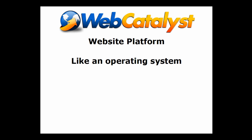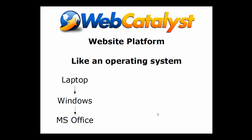Your website platform is kind of like an operating system. So when you get a laptop, you install Windows on it, or you might have Mac OS. Windows is an operating system. To get it to do things, you install Microsoft Office on top of it. So Office is installed on Windows, which is installed on the laptop. The laptop is the hardware, Windows is the operating system, and Office is the software — the application that lets you create spreadsheets, document pages, all that stuff.